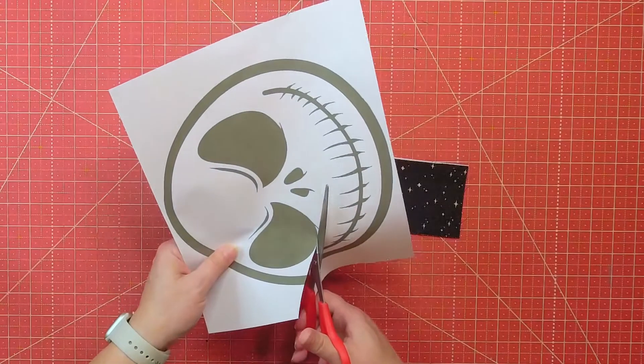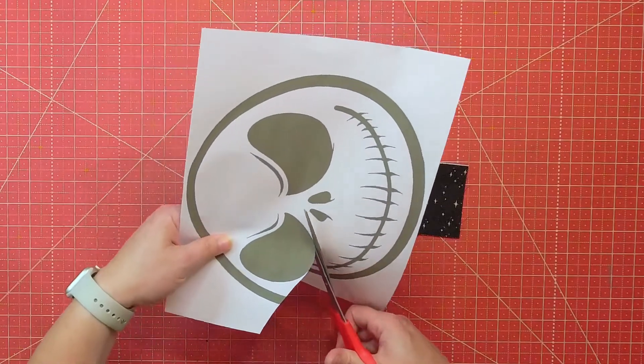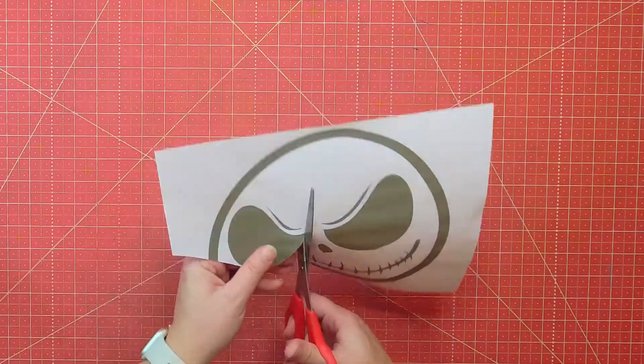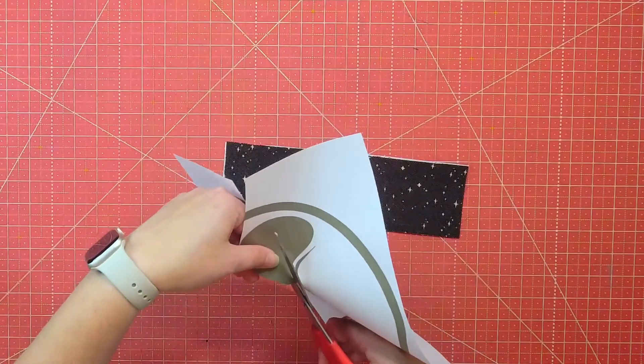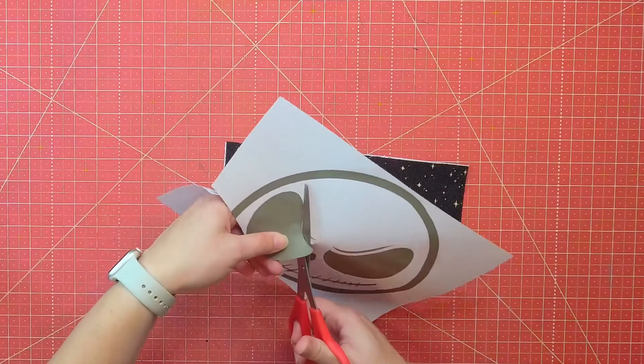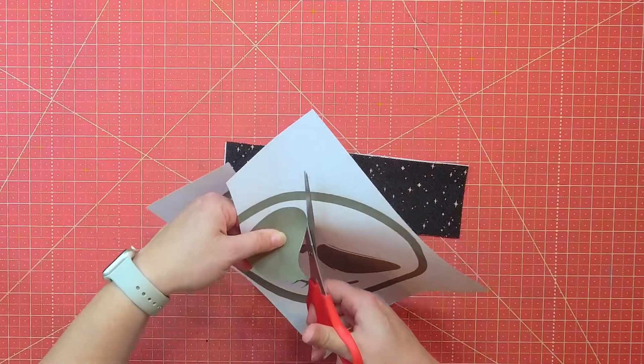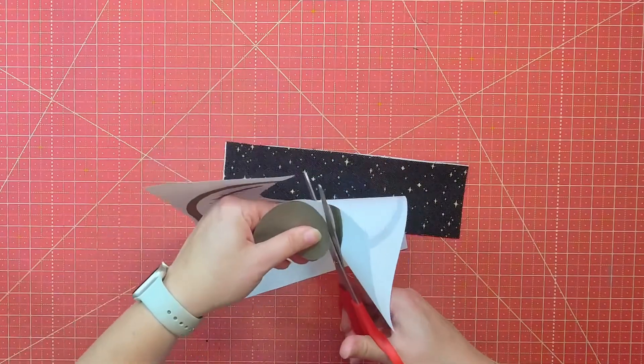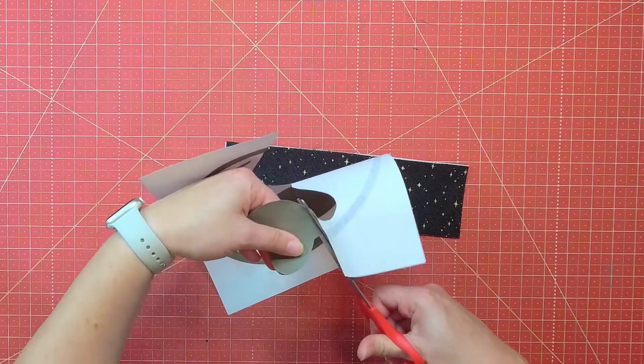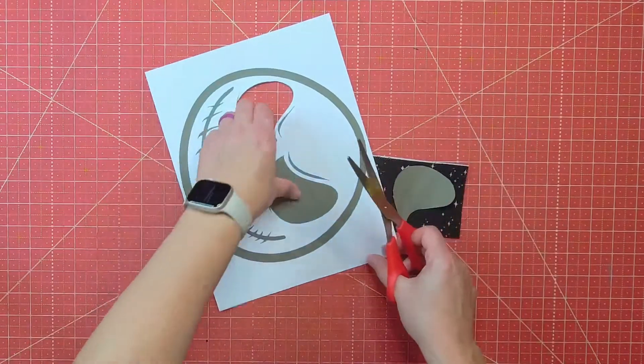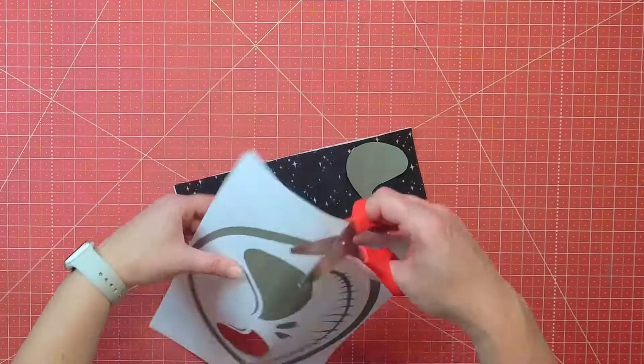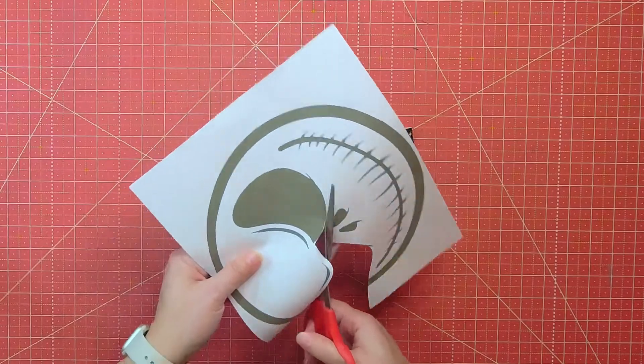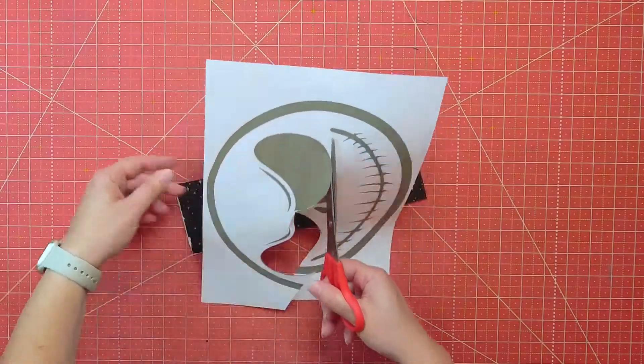So now I'm going to cut out the eyes and the nose on the coloring page that I printed out with the Jack Skellington face on it. It was really the perfect size for this project. Now, keep in mind that if you're using a printout like I did, so this was just a coloring page that I found on the internet, that it likely has a copyright attached to it. So you won't be able to sell these. I'm making these for my own personal use, one for each of my kids. So keep that in mind.